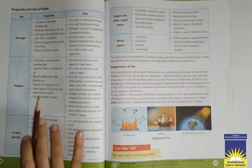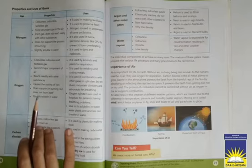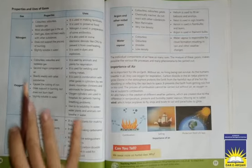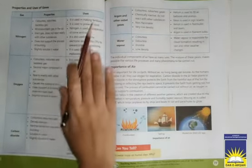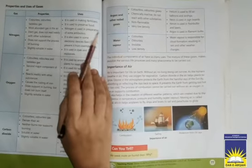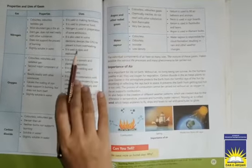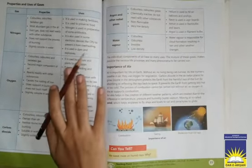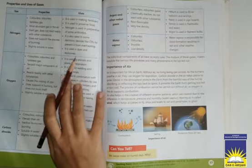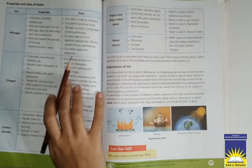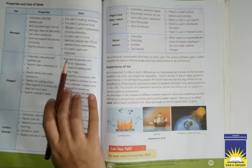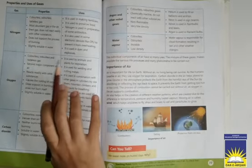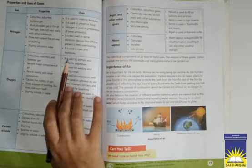Now we will discuss about uses of oxygen. Oxygen is used by animals and plants for respiration. It is used for welding and cutting metals. It is used in combination with other gases in cylinders by sea divers, mountain climbers and astronauts for breathing. Oxygen cylinders are used in hospitals for patients having breathing problems.